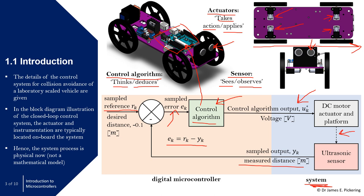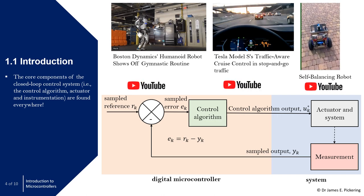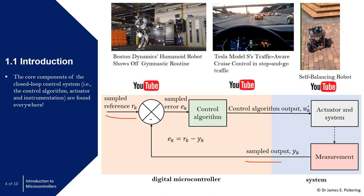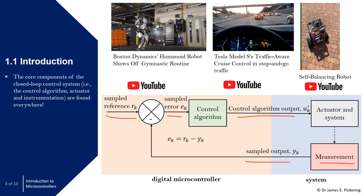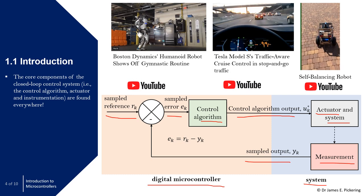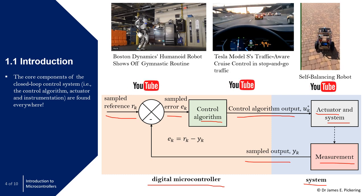The system looks slightly different from a purely mathematical model because although there's no signal connection in the traditional sense, there is a physical connection — both the ultrasonic sensor and DC motor are on board the lab-scaled vehicle. The system process is physical now, not an output from a mathematical model. This is just the general form of a closed-loop control system for a digital control system, with sampled reference, sampled output, sampled error, control algorithm output, and measurement, actuator, system and control algorithm blocks.